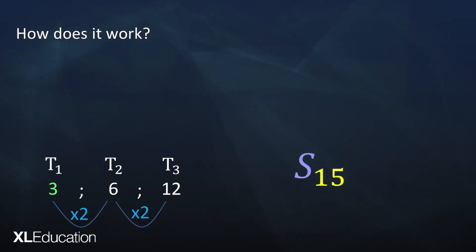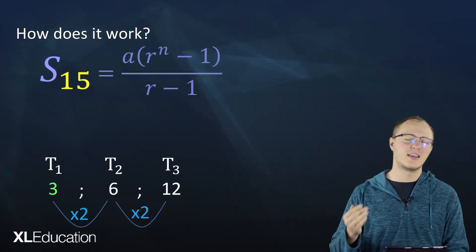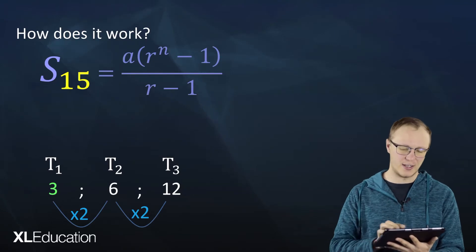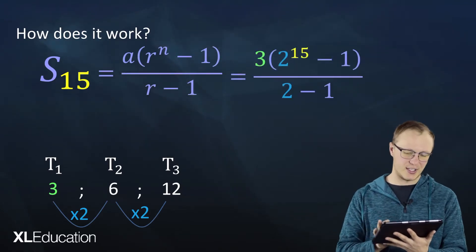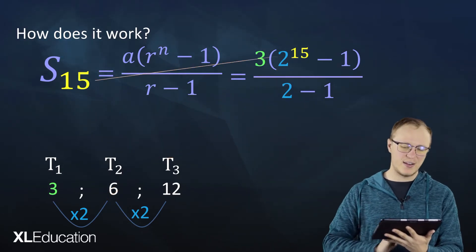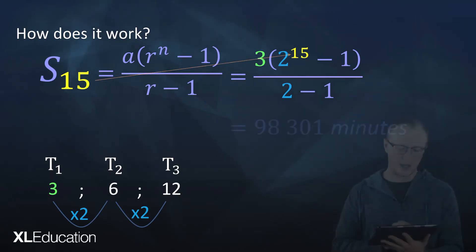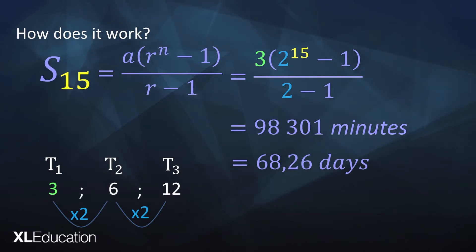To find S15, we've got to get our formula. We know a is the first term, that's 3. R is the common ratio, that's 2. And n is 15. So we've got all the things that go into our formula. We compute it and get 98,301 minutes. This game is going to take him 68.26 days of continuously playing to complete. So I have a good feeling that he's not going to complete the game.